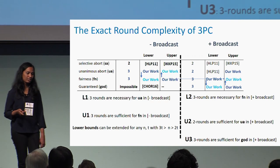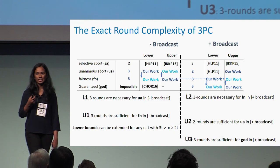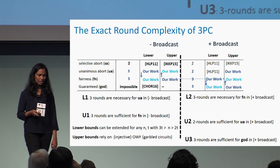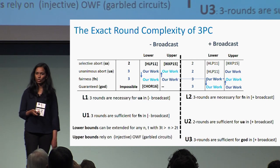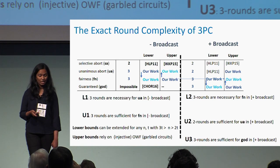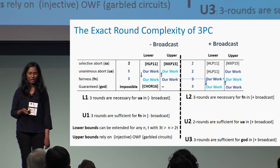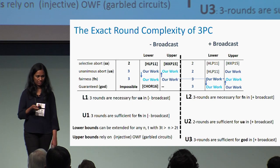The good news is that our lower bounds are generic and extend for any N where N lies between 2T and 3T. Our upper bounds, though specific to the three-party case, are built only from one-way functions or one-way permutations, and technique-wise, garbled circuits underlie all our upper bound constructions.